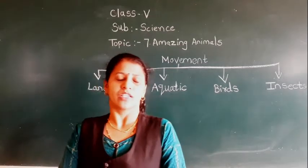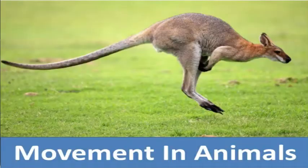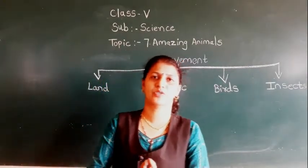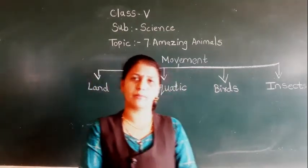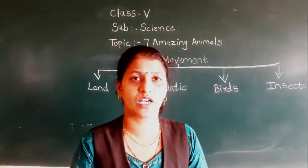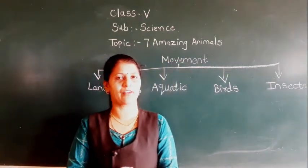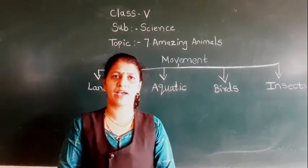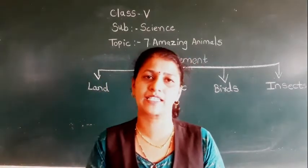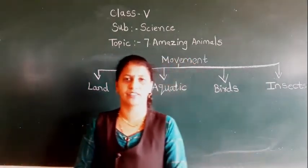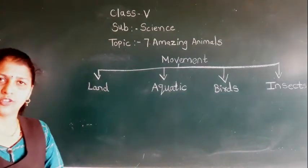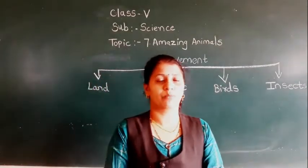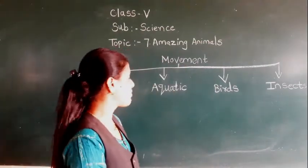In today's video we are going to discuss about movement. When animals move from one place to another, why is it necessary? It is very necessary in the search of food. Like in history, early humans used to move from place to place in search of food, water, and shelter. Animals also move in search of food and shelter, and to protect themselves from enemies.